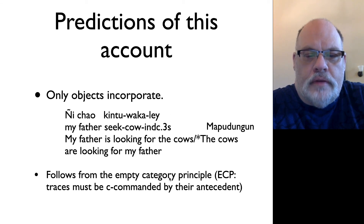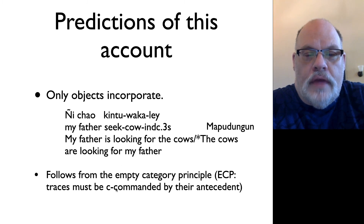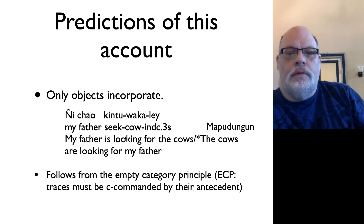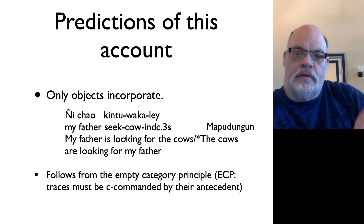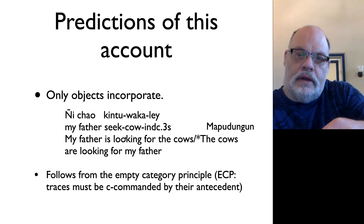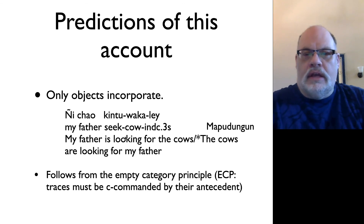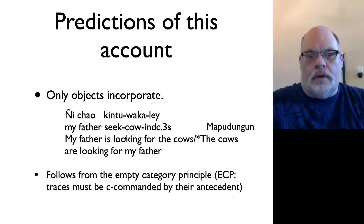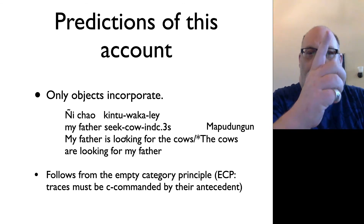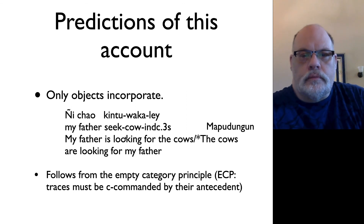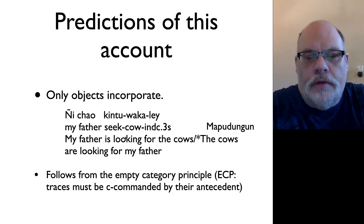The Empty Category Principle, or ECP, says that traces have to be c-commanded by their antecedent — the element that has moved. If you believe this constraint, then the fact that only objects can incorporate is explained. Because if you were to try to incorporate subjects, you would have to do downward movement into the verb. Only when incorporating the object are you doing movement up the tree, so that follows from the Empty Category Principle.